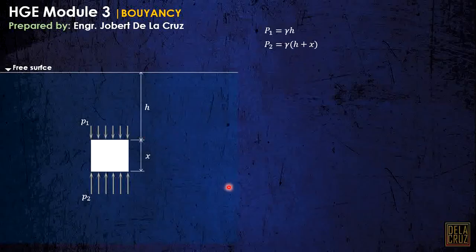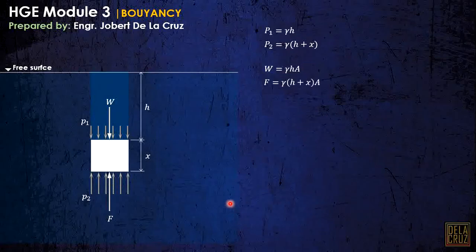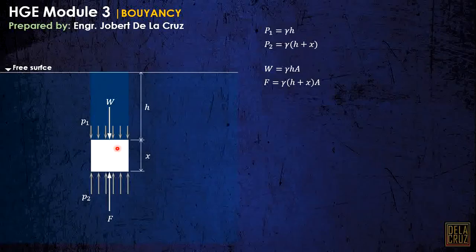This pressure will create a resulting force. Up at the top, let's call that W — that is just the weight of the water projected above this body. This will also create a resulting force; let's call that F. The weight W can be calculated as P1 times area, which is gamma × h × area. F is just the same: pressure times area, so gamma × (h + x) × area. As you can see, F and W cannot be equal, or rather, they will not be in equilibrium by just observing these forces.